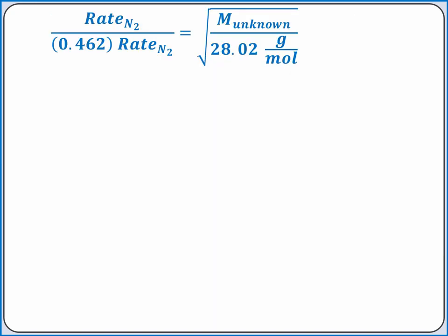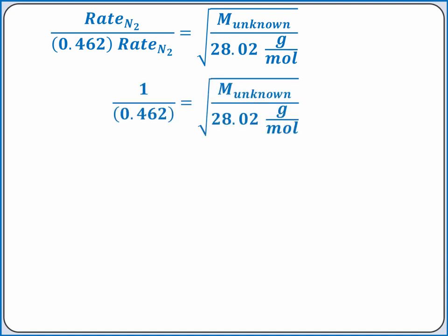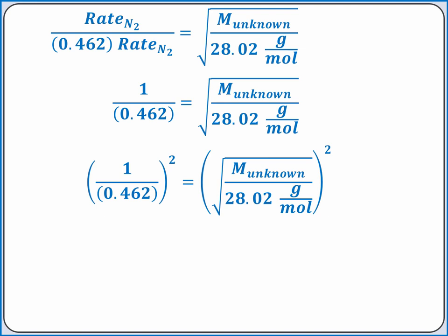Now we can solve this equation using algebra for the molar mass of the unknown. On the left side of the equation, the rate of effusion of nitrogen gas cancels out and we're left with 1 divided by 0.462. To get rid of the square root on the right side of the equation, we can square both sides.